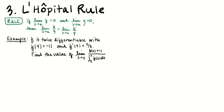Now let's talk about L'Hôpital's rule. The rule says if the limit of each of f and g is 0 as we approach a, then the limit of their ratio equals the limit of the ratio of their derivatives. Two key things to remember: never say something 'equals 0 over 0' — 0 over 0 is not a number, so it can't equal anything. Also, don't forget to maintain limit notation throughout.